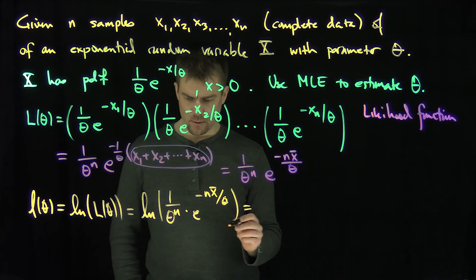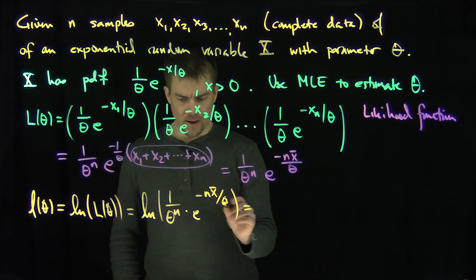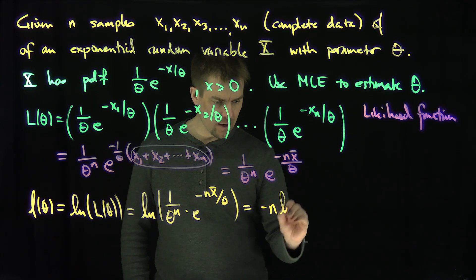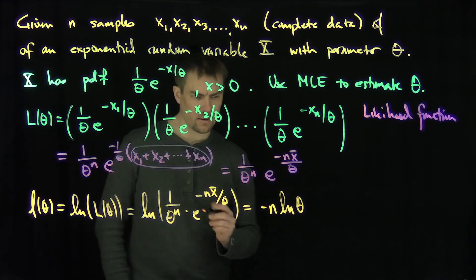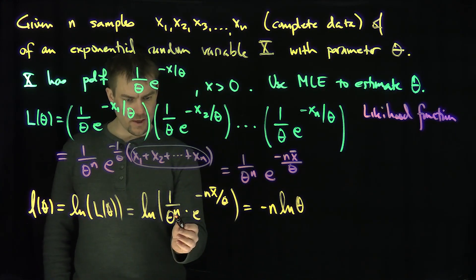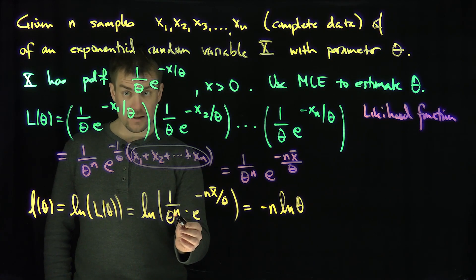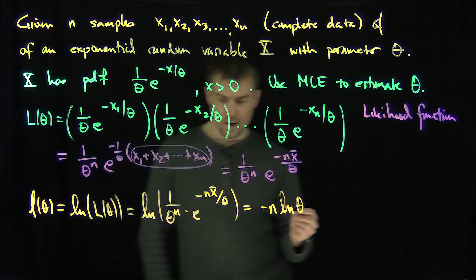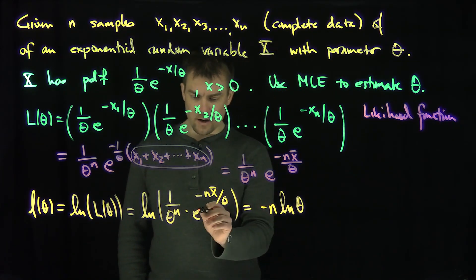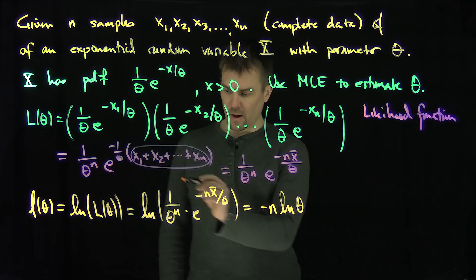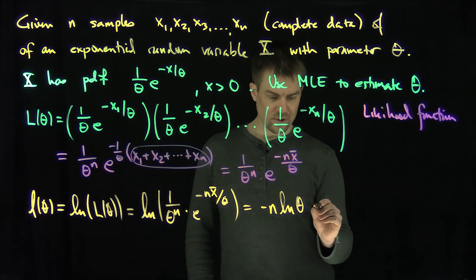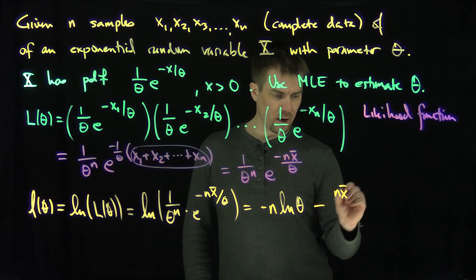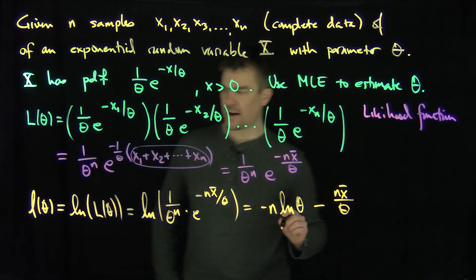And so now this is going to be equal to what? I'm going to have a negative n log of theta over here by properties of logarithms because the theta is in the denominator. So this is really like theta to the negative n. So I can pull negative n out. And then the log of the exponential of this thing, that log and exponential is going to cancel out for the second term. It's going to have a negative n x bar over theta.